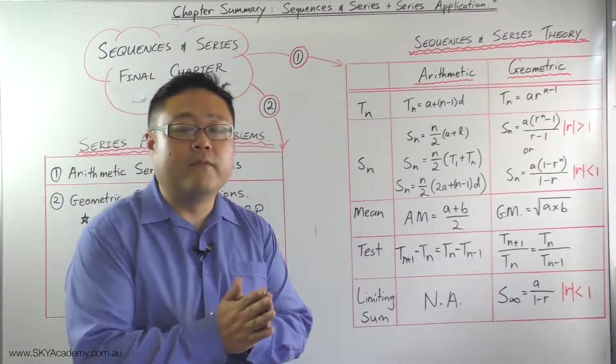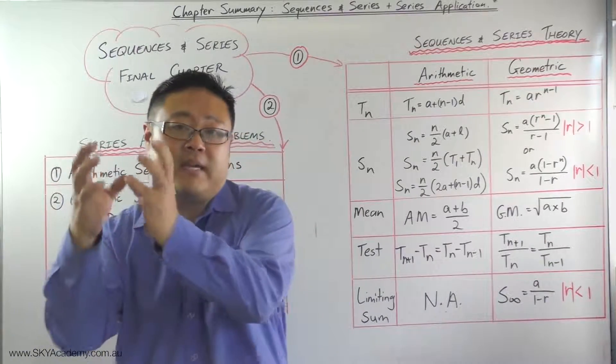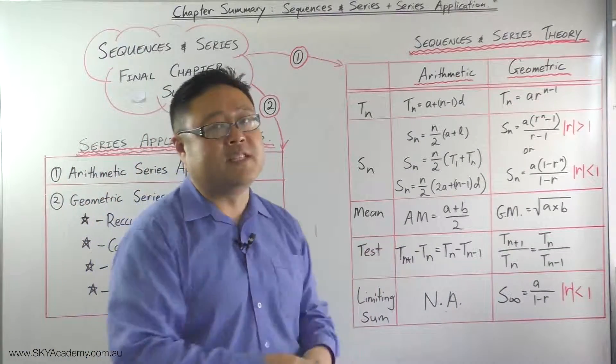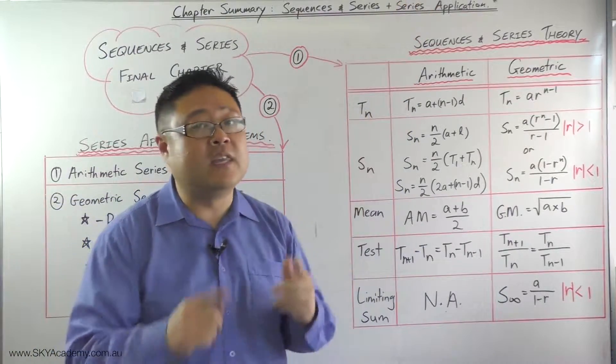Which means that you can keep on adding forever and it'll turn out to be a set value, if it's not divergent. So in other words, divergent means it shoots off into infinity, either positive or negative.